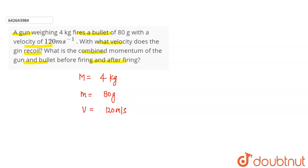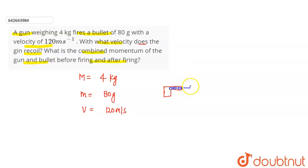With what velocity does the gun recoil? We have a bullet inside the gun. When the bullet is fired, the bullet goes forward giving momentum in one direction, and the gun moves backward — that is called recoil speed. This happens because momentum will be conserved.